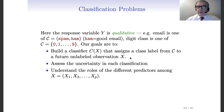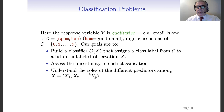The idea is that the classifier should be applied to all future unlabeled observations. You have some training data where you already have the labels, you learn how to classify based on this training data, and then in the future you will have some x without a label and your classifier will decide the best label for it. We would also like to assess the uncertainty in each classification and, if possible, understand the roles of the different predictors x1, x2, ..., xp for the final classification.